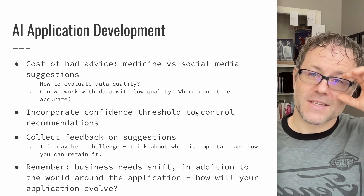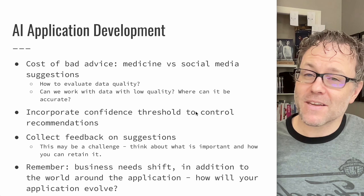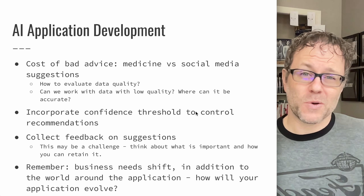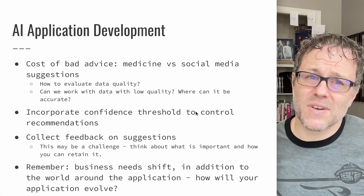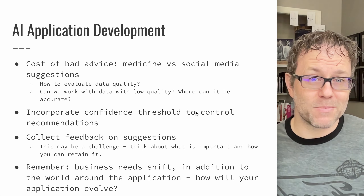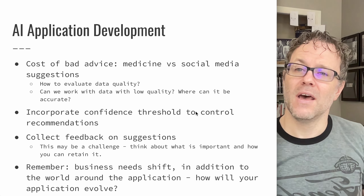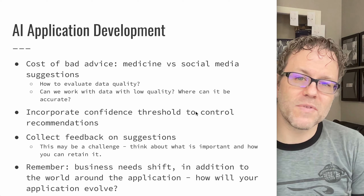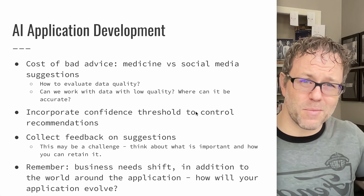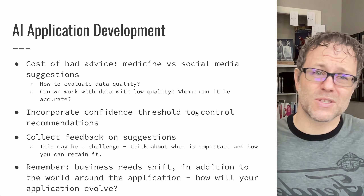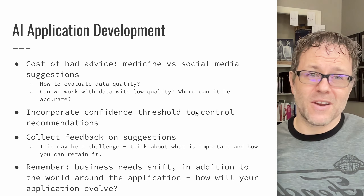You also have to consider the cost of bad advice. Social media suggestions — here are some connections — if that's wrong, no big deal. But if you recommend the wrong medical treatment to somebody, that could be a significant liability. You have to think about the quality of your data and how you can make sure it's accurate. Maybe you don't need to worry too much about those factors in certain applications, but maybe predictions are the centerpiece of your application. What happens if you make bad predictions? What's really the cost of that? What's the value of making good predictions? You might need to incorporate a confidence threshold to control the recommendations your model makes. Maybe if you're just doing a binary classification and you're not happy with a particular level of confidence, you just don't provide that prediction, or you say you can't do anything with this particular input. It's okay to bail out, and it's often better to say we don't have a good answer for you here than to provide a bad answer.